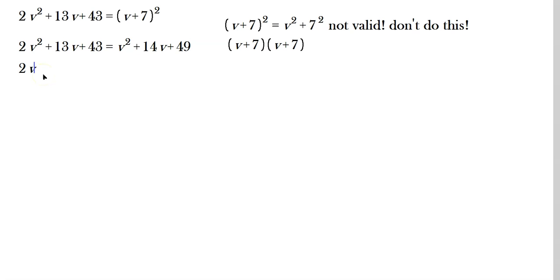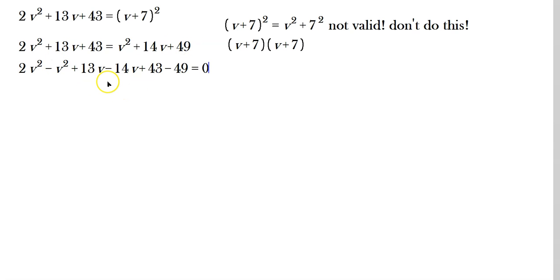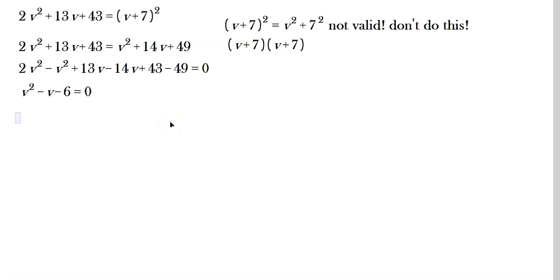Gather all terms on one side: 2v squared minus v squared plus 13v minus 14v plus 43 minus 49 equals 0. I moved v squared, 14v, and 49 to the left by subtraction. Simplifying: 2v squared minus v squared is v squared; 13v minus 14v is negative v; 43 minus 49 is negative 6. So it's v squared minus v minus 6 equals 0.